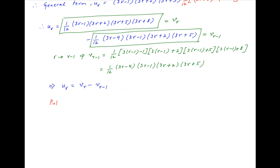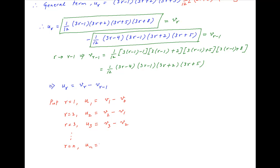Now, put r equal to 1. We get the first term of the series: u1 equals v1 minus v0. Put r equal to 2: u2 equals v2 minus v1. Put r equal to 3: u3 equals v3 minus v2. And so on. Put r equal to n: the nth term of the series, un, equals vn minus vn minus 1.